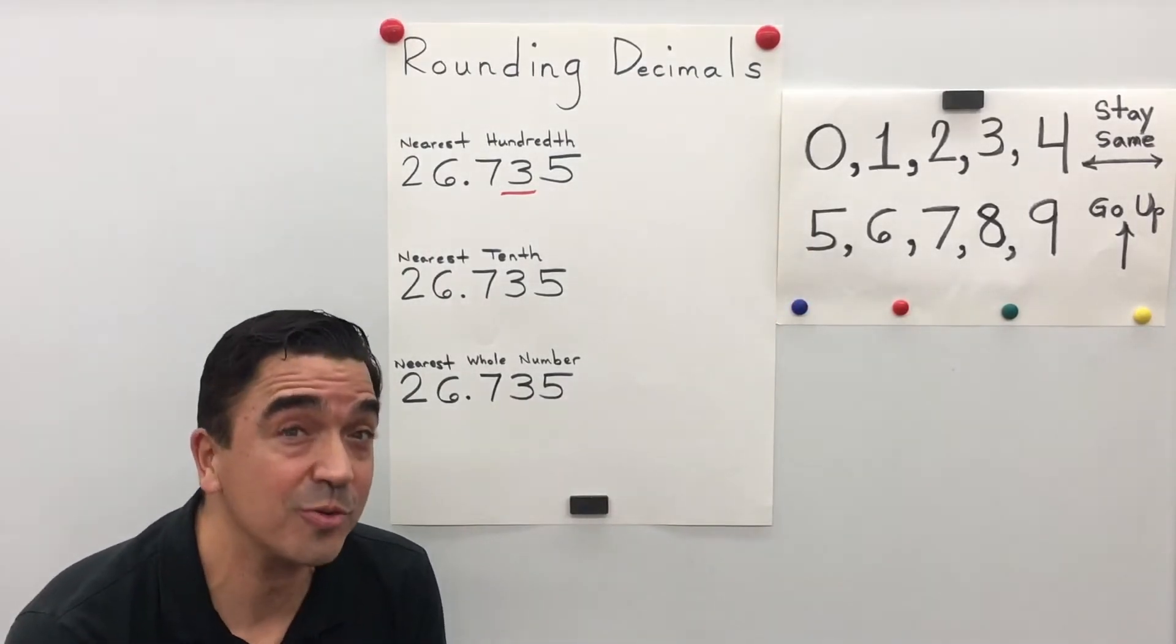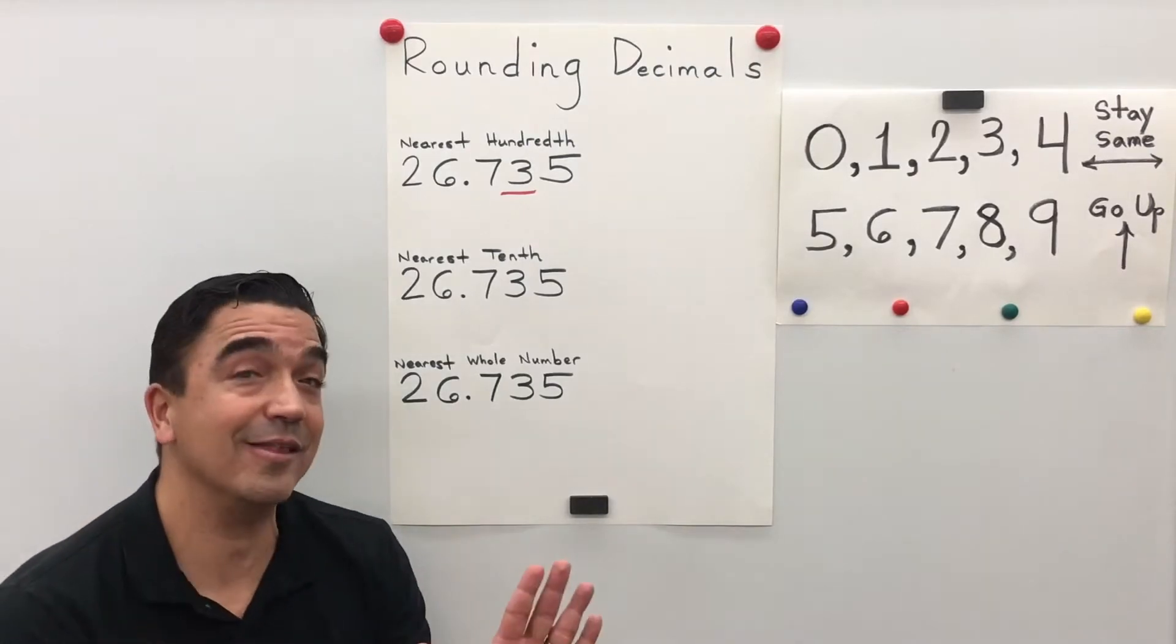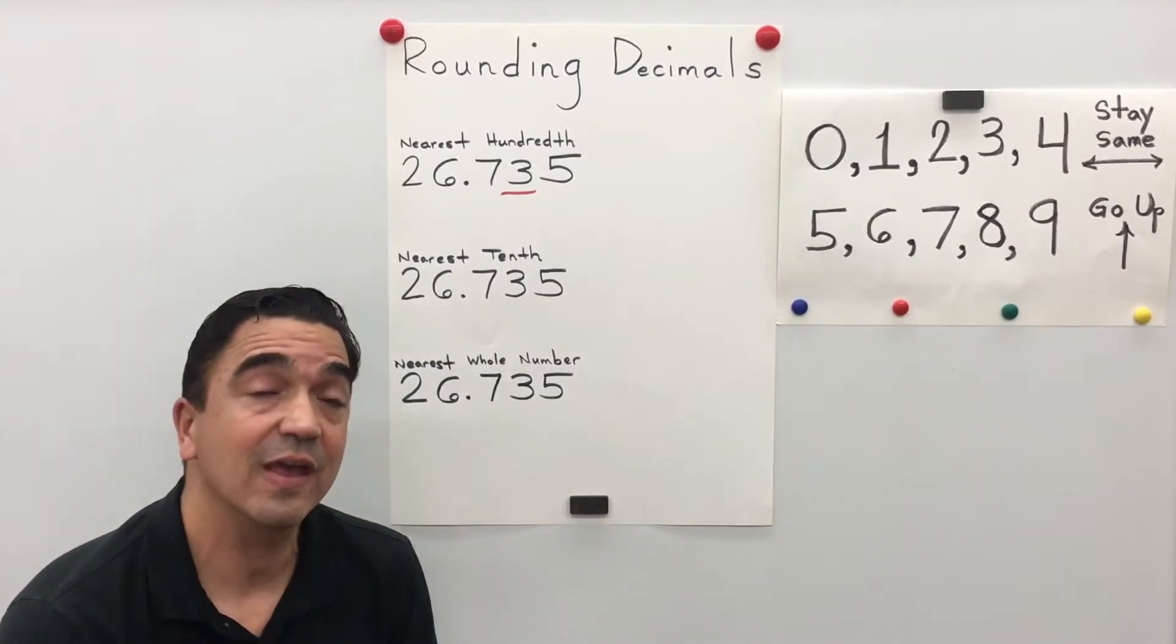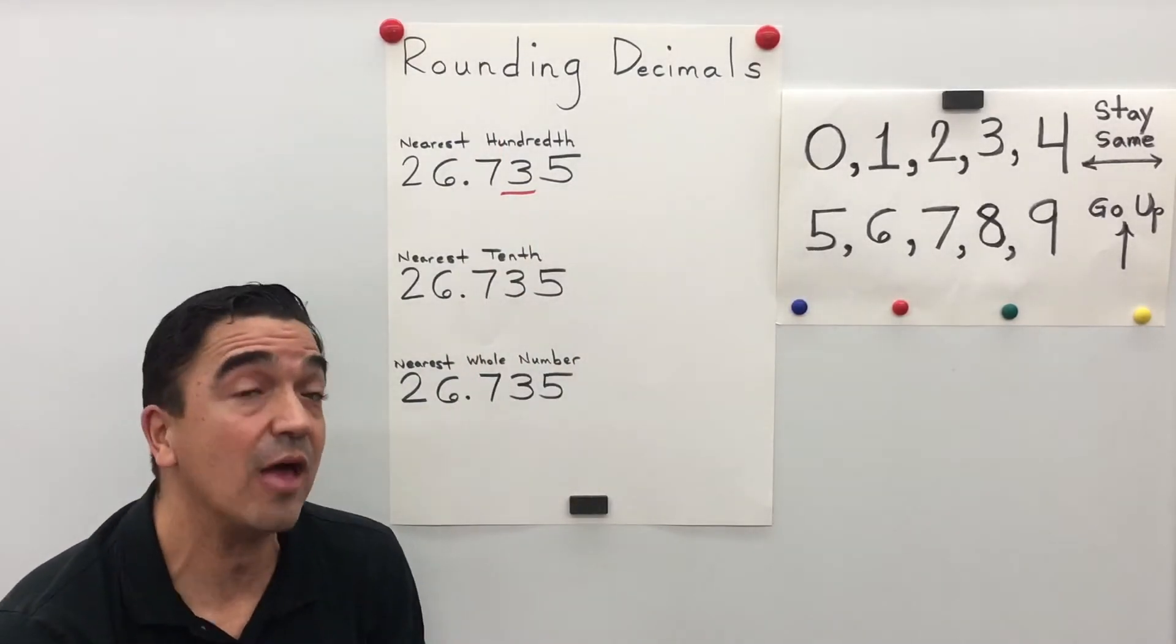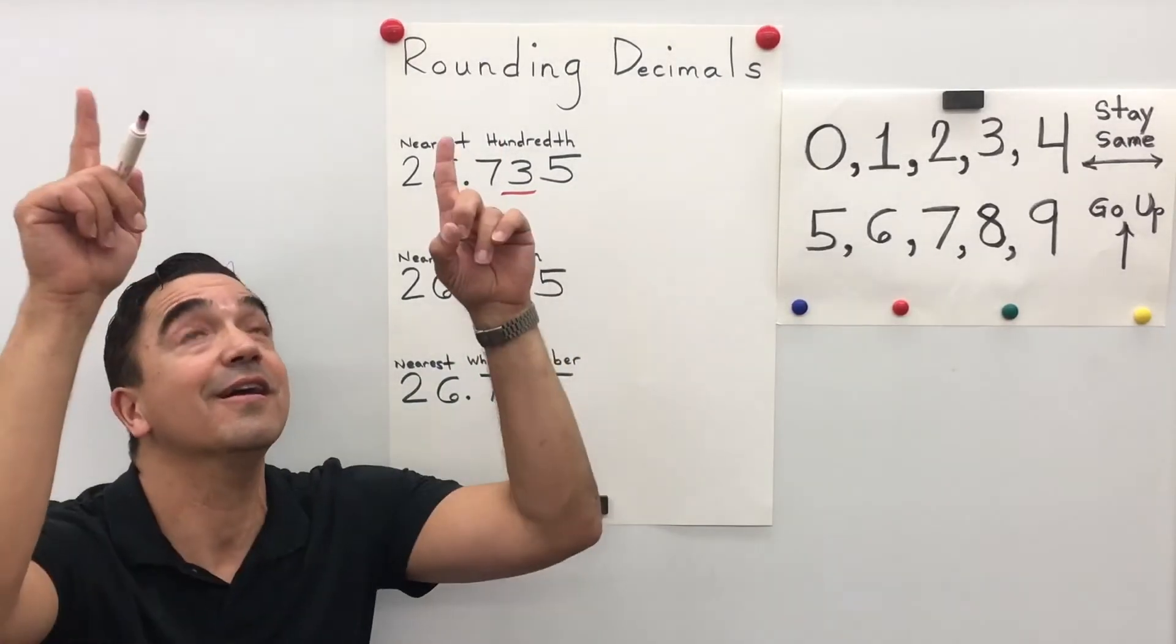Zero, one, two, three, four stay the same. Five, six, seven, eight, nine go up. So the five is going to tell the three to go up.